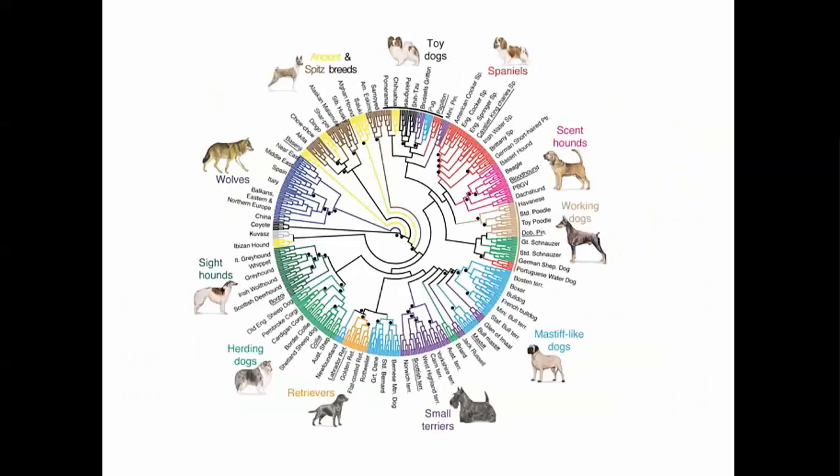Darwin knew that artificial selection - human beings choosing what organisms breed - could produce enormous diversity, like wolves being bred into dogs ranging from chihuahuas to Great Danes, all from the same origin. So he asked: what if nature could in some way control breeding? Obviously nature doesn't pick who breeds with whom, but it's more about who survives long enough to breed - who can hide, who can find enough food, who can survive day to day - and those individuals will have offspring that also likely have the ability to survive and breed in that habitat.